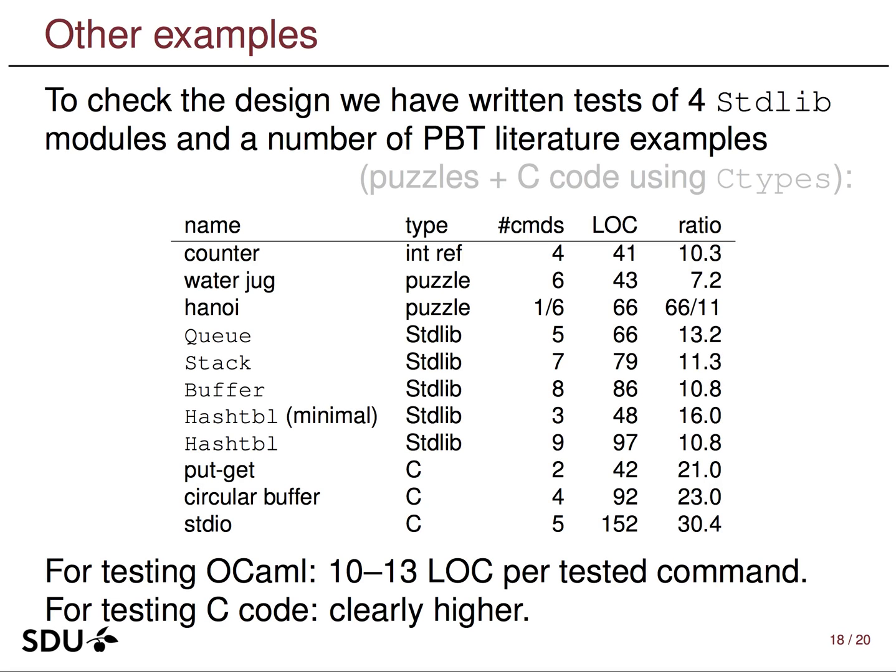This was a minimal example, but I have tried to test-run the framework on a number of examples from the property-based testing literature and a few others. This spans OCaml code, some puzzles, and also some C code. For OCaml code it doesn't take more than 10 to 13 lines of code per tested command, which I think is decent.